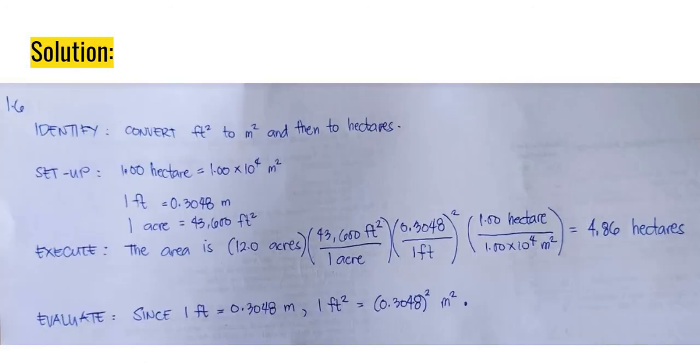The solution is here. First, identify. Convert square feet to square meters and then to hectares. Setup. The information in the setup is from the word problem. 1 hectare equals to 10,000 square meter. That is 1 times 10 to the power of 4 square meter. 1 feet equals to 0.3048 meter. And 1 acre equals to 43,600 square feet. And then, do the math. Execute. The answer is 4.86 hectares.